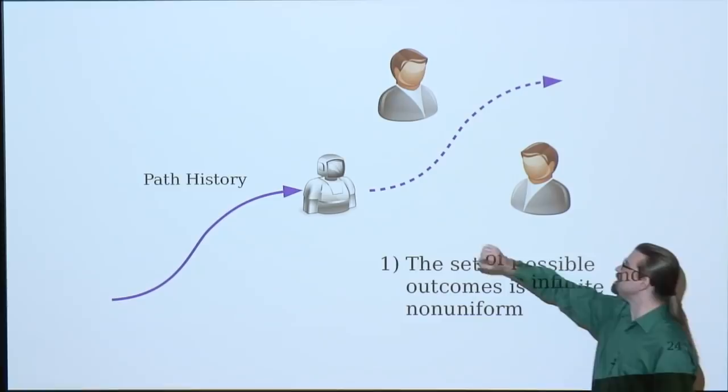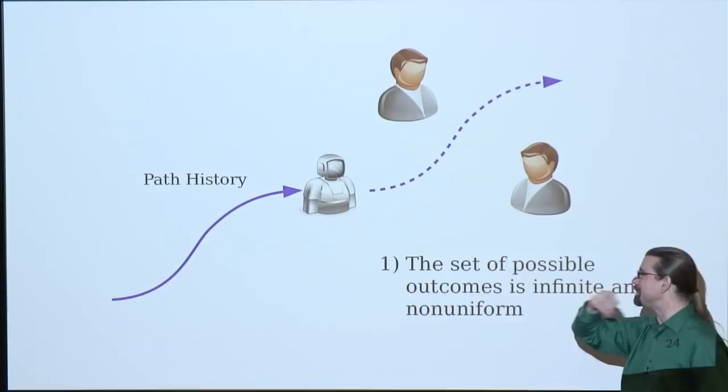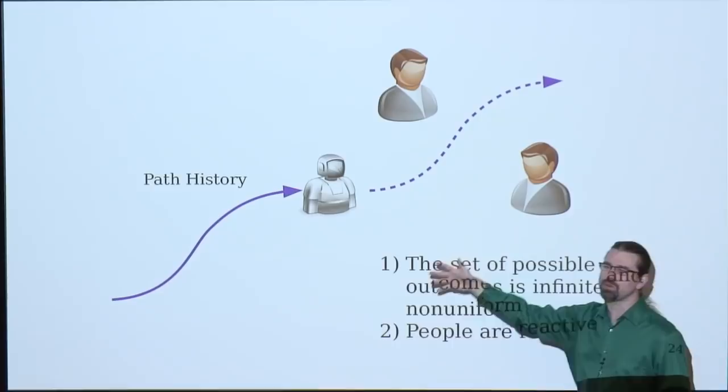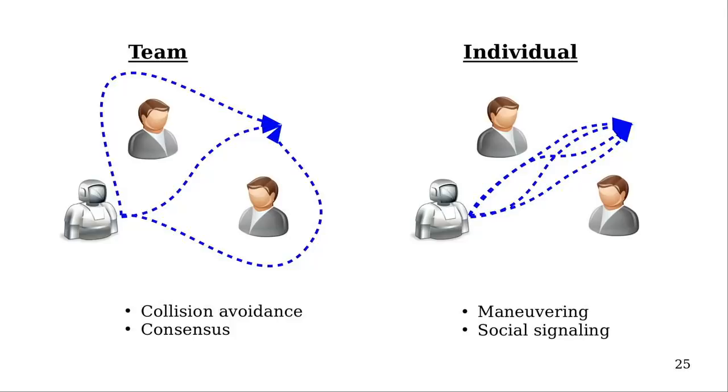Secondly, people are reactive. So even if it committed and it said this is going to be where I'm going to go, people might trample over the trajectory. They might do something that's going to change what the robot wants to do anyway. So there's really no point in over committing to a specific geometric trajectory in the first place, and turns out that's not what people are doing anyway. So I put a robot, but it could just as well be a person here. So there's a team aspect and individual aspect to social navigation, but you'll see that the same structure exists in any teaming problem.